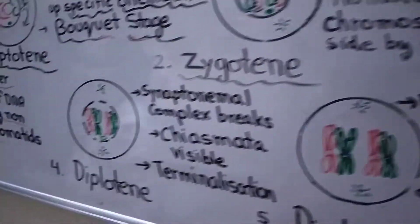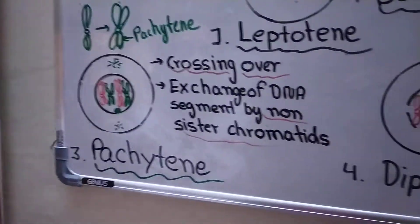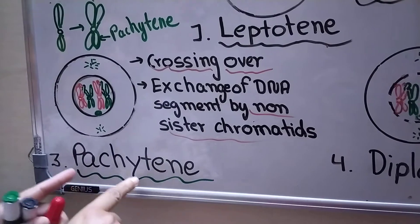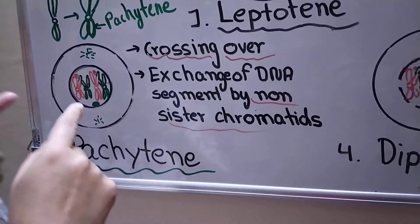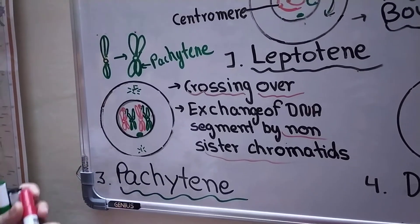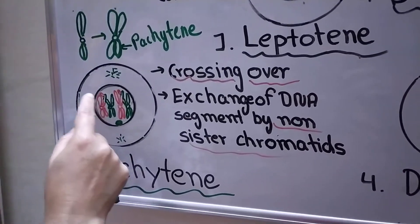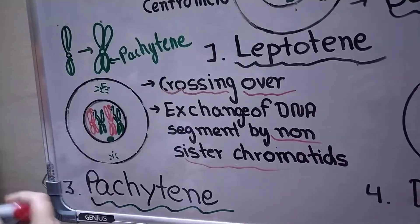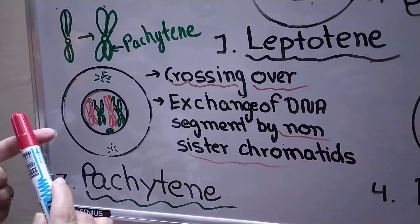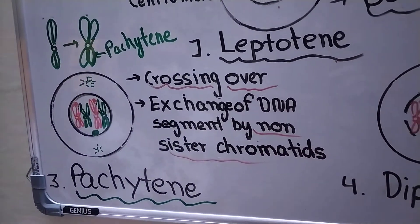Now the third stage is pachytene. Pachytene is a very, very important stage. In this stage, the non-sister chromatids of two homologous pairs of chromosomes cross over. Crossing over takes place here, and exchange of DNA segments takes place between the non-sister chromatids.